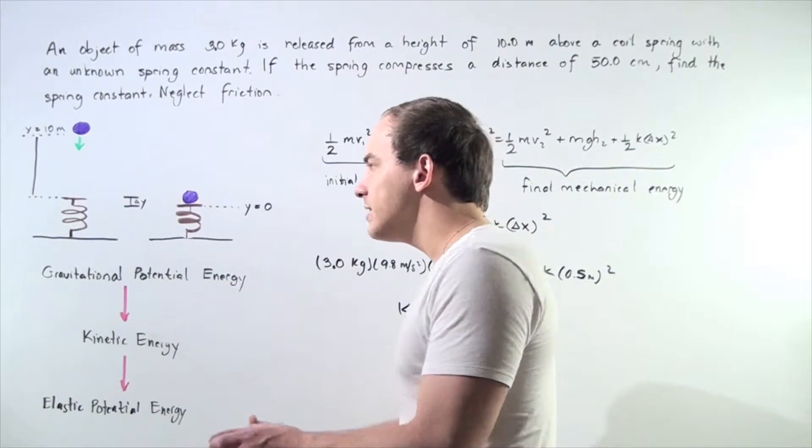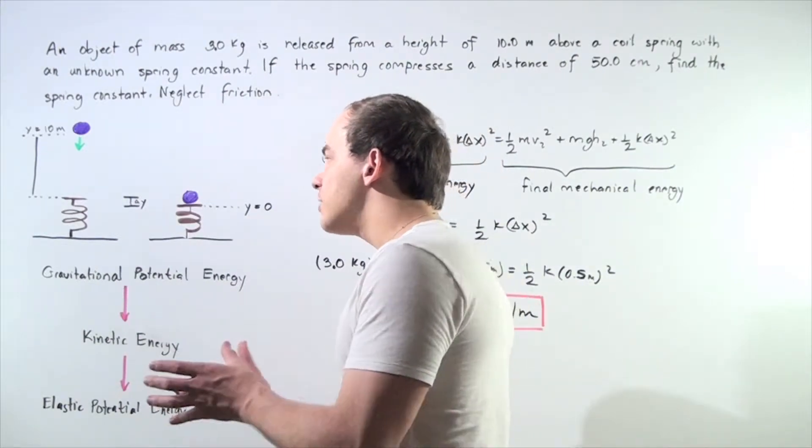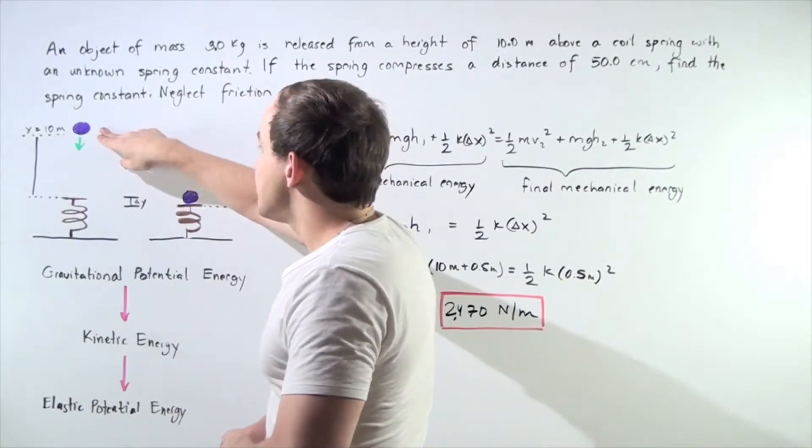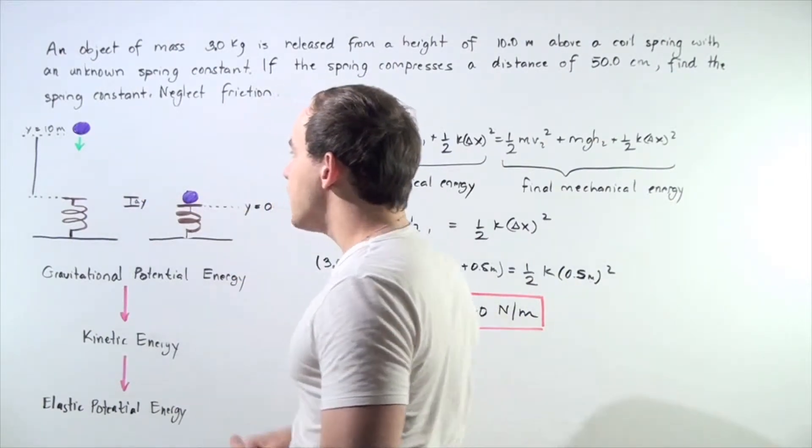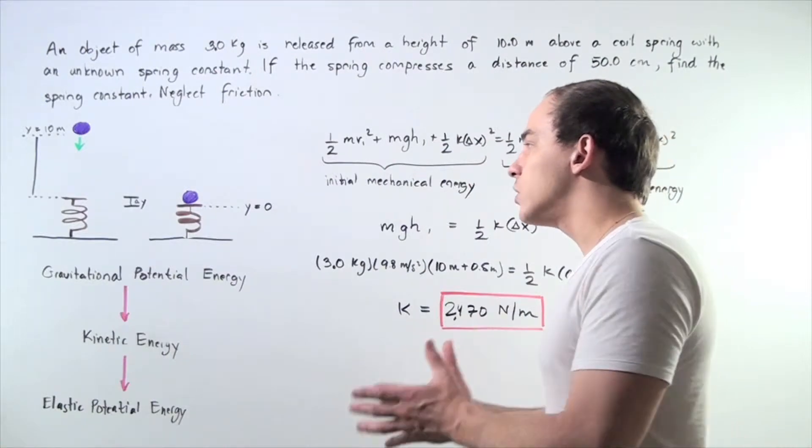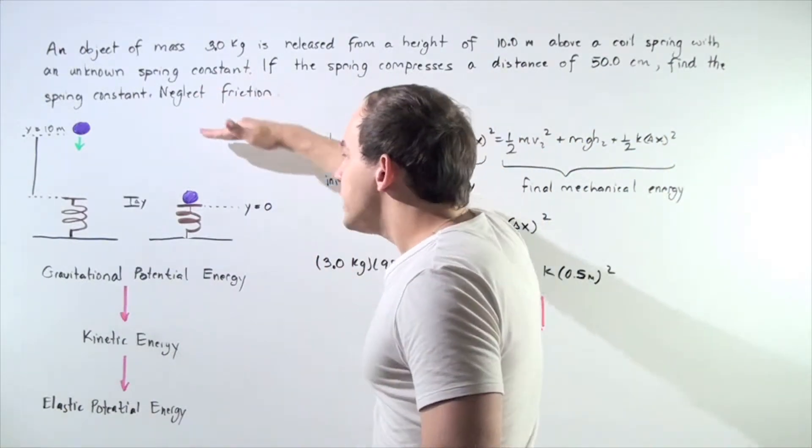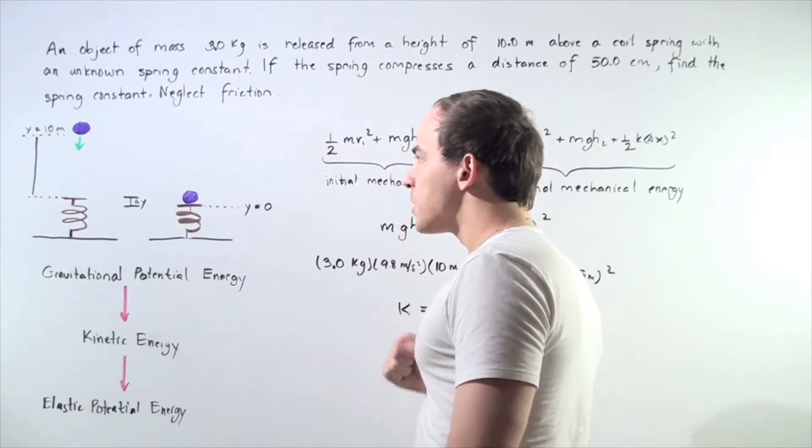We're basically trying to find the total mechanical energy before the object begins moving at a position of 10 meters above the spring, and then we want to find the final total mechanical energy of the object when the object fully compresses our spring.